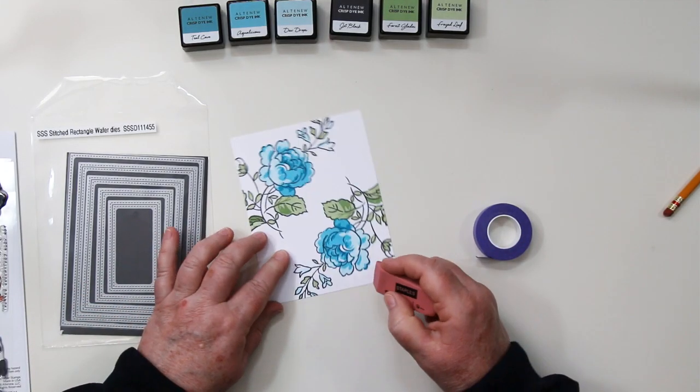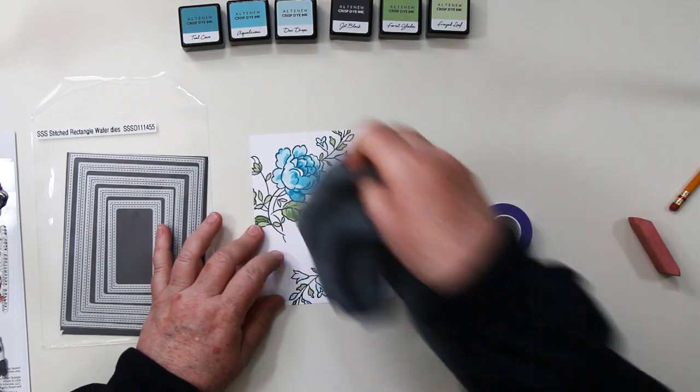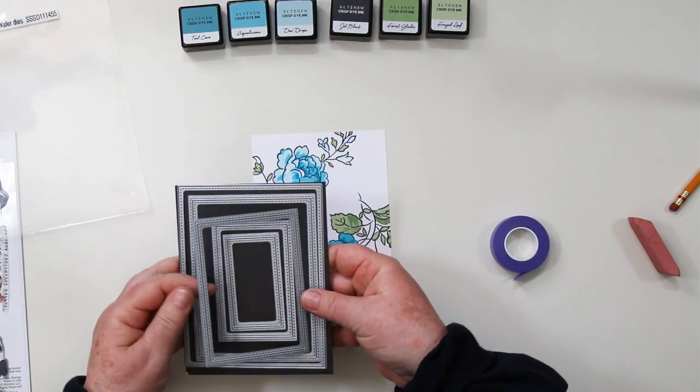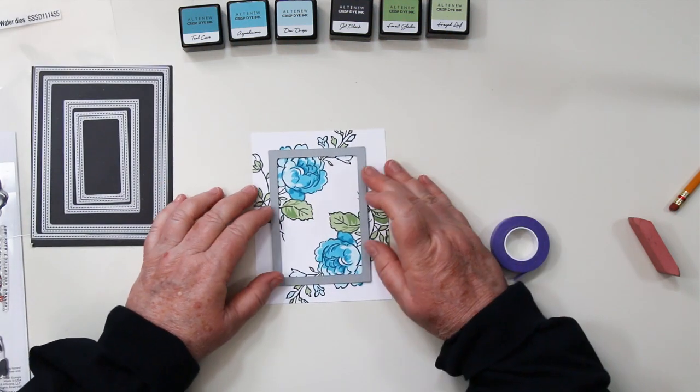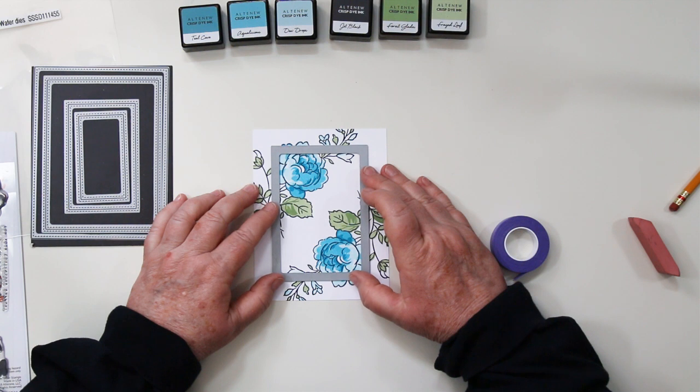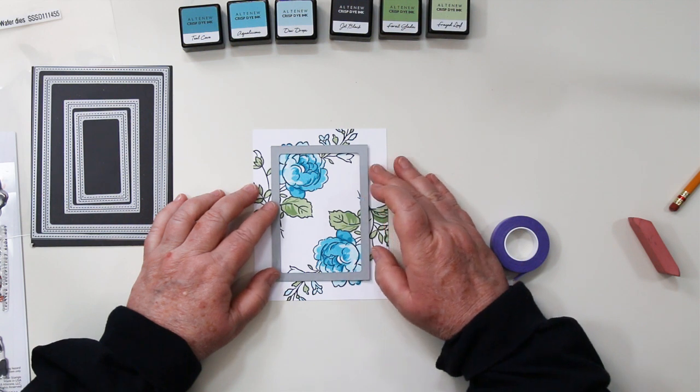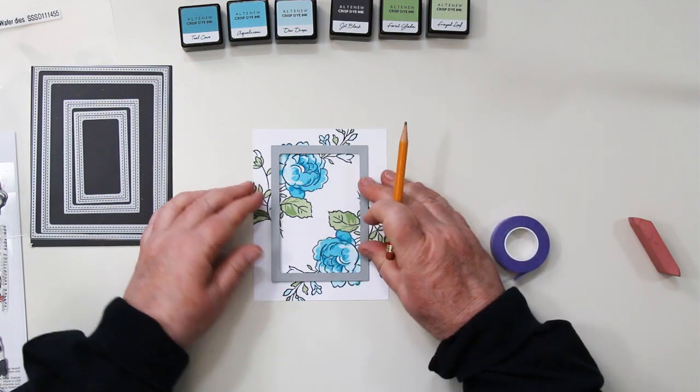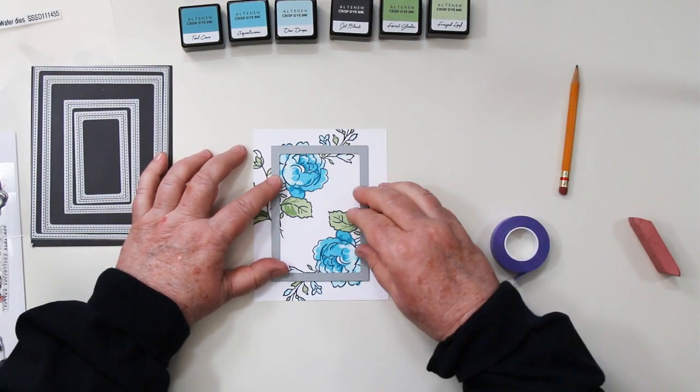I am going to take my frame dies. These are the Stitched Rectangle Wafer Dies from Simon Says Stamp, and what I'm doing is I'm trying to line up evenly my flowers and the border around the outside.